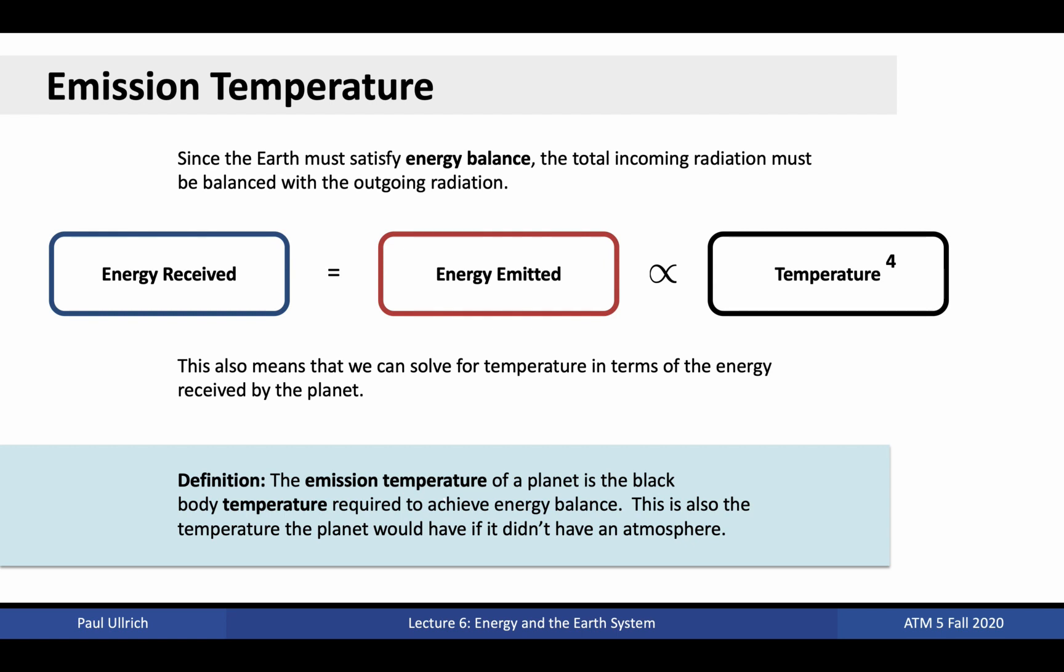Thus, we call the temperature of a planet without an atmosphere the emission temperature. This is the same as the temperature a black body would need to have to achieve energy balance for a given amount of energy received.